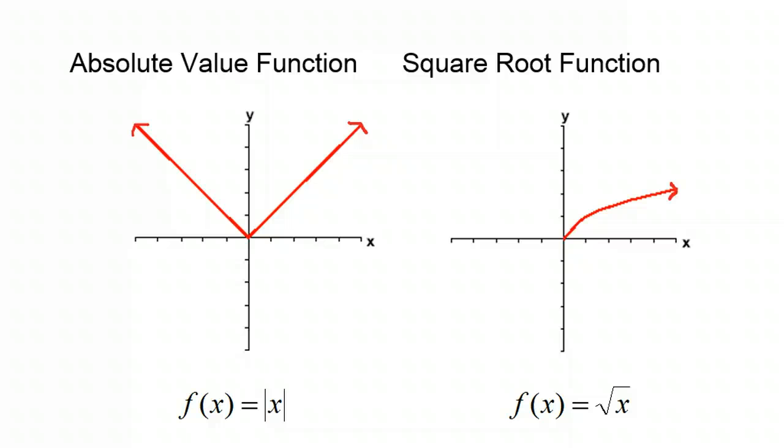Here are the next two functions, the absolute value function and the square root function. Notice that for the absolute value function, the graph is always going to be a v. And for the square root function, the graph is actually going to be half of a sideways parabola. If we had the entire parabola, it would no longer be a function. So we only consider the positive square roots of x.